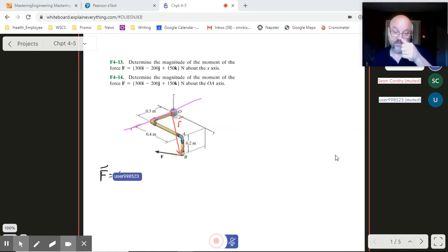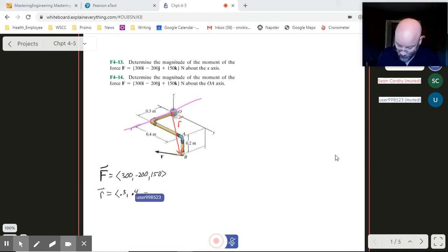Now we need to define our moment arm. So basically we've got to get from O to B. So really we're going to come up with a vector OB. I'm just going to kind of call it R here. But in terms of X, OB has to come out 0.3. In terms of Y, OB has to come over 0.4. And in terms of Z, it's going down at 0.2.